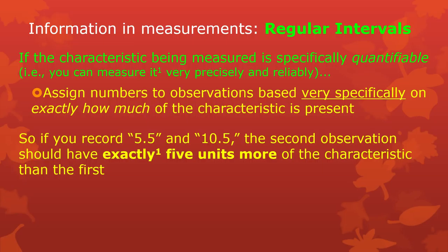On the other hand, if you're having people record attractiveness and one person was a 10 and one was 11 and another was between a 10 and 11 — say you gave her a 10.5 — and another person was between 5 and 6 and you gave her a 5.5, it looks like you've got regular intervals, but you don't. It doesn't make any sense to say the second person is exactly five points more attractive than the other, or that 10.5 attractiveness is really exactly halfway between 10 and 11. You can't say that — there's no way to know whether those units are regular.